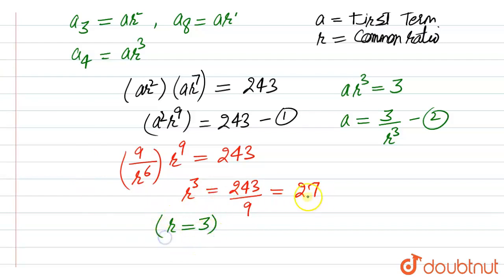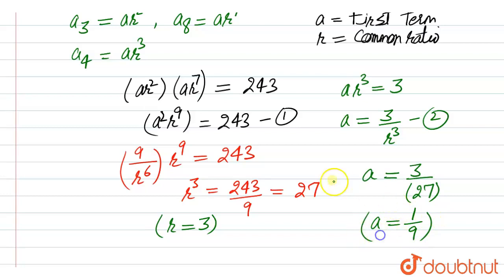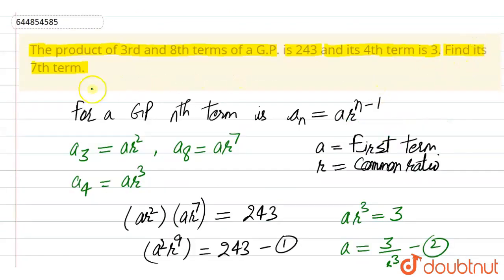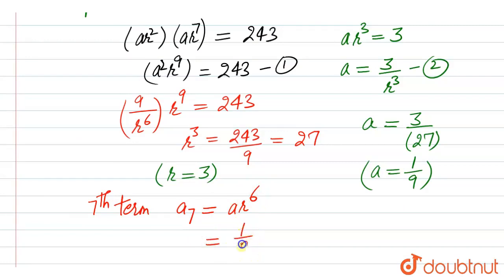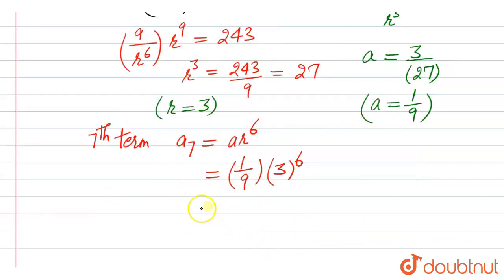Since r³ = 27, we get r = 3, as 3 cubed is 27. From equation two, a = 3/r³ = 3/27 = 1/9. Now we need to find the seventh term. The seventh term a₇ = ar⁶, which equals (1/9) × 3⁶.